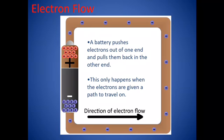Electron flow. Have you ever noticed that a battery has a positive and a negative side? Well, the negative side is where your electrons are going to flow. So a battery pushes electrons out one end and pulls them back into the other end. This only happens when the electrons are given a path of travel.